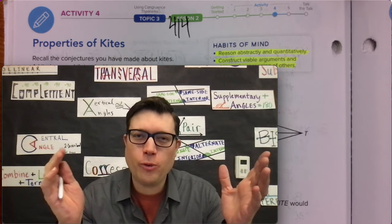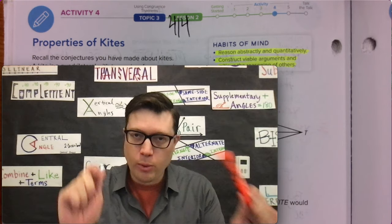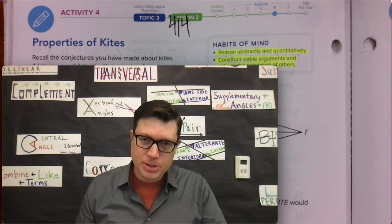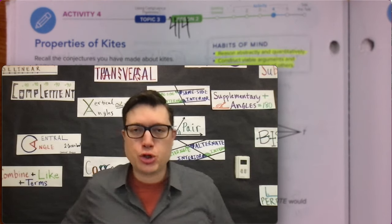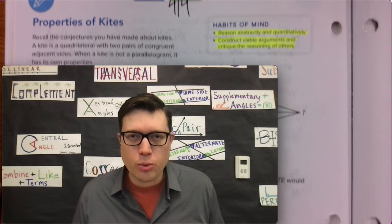What's up, everybody? This is page 414. We're talking properties of kites. Now, I hope you got some highlighters, something to write with, and I encourage you, first of all, let's acknowledge habits of mind. These are things that mathematicians do. You're going to reason abstractly and quantitatively. We're going to construct viable arguments and critique the reasoning of others.